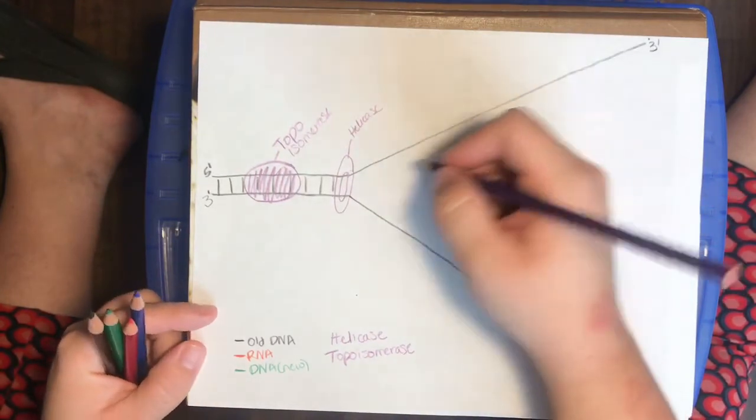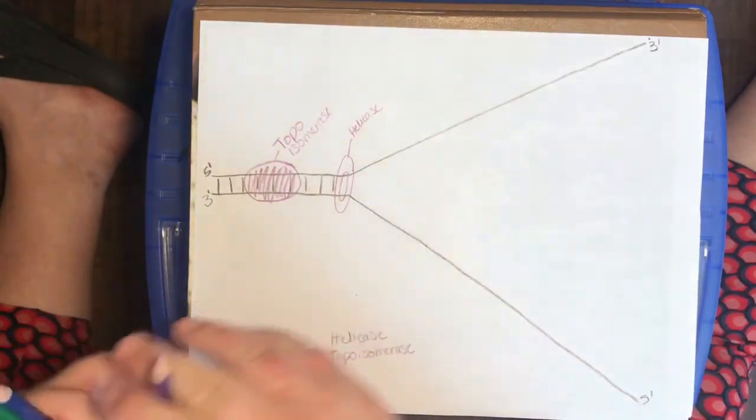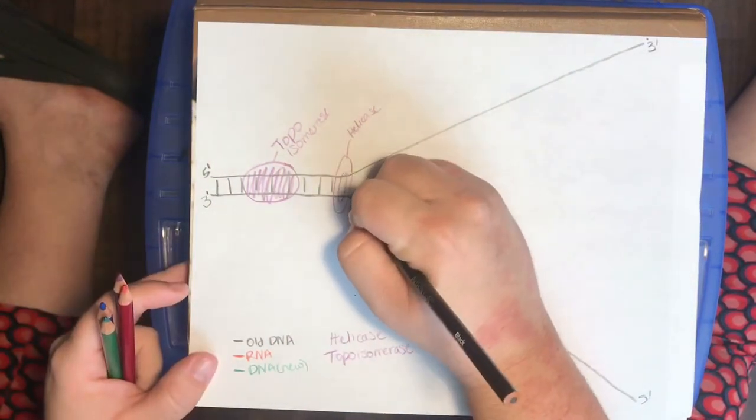And it's going to untwist that DNA and then rejoin the ends that it's just separated back into a covalently bound phosphodiester bond to relieve that tension that's ahead of the fork.